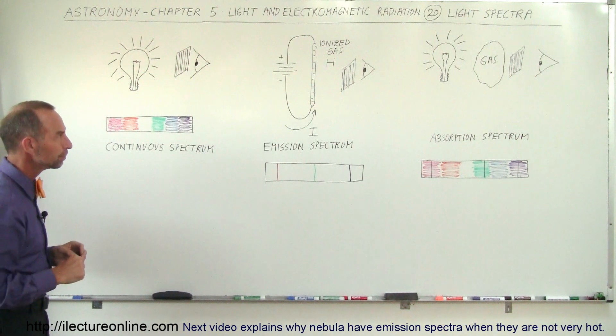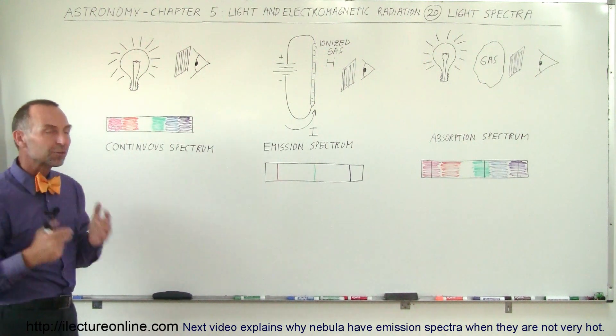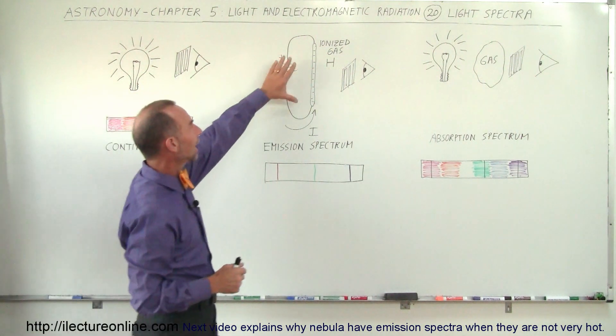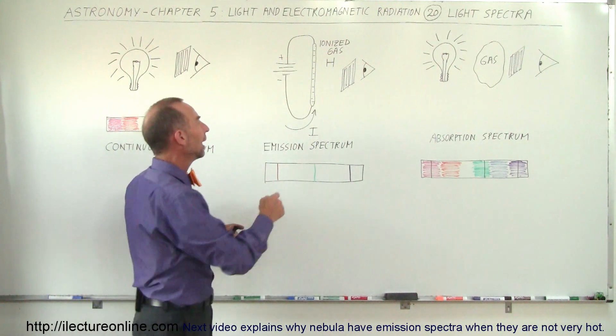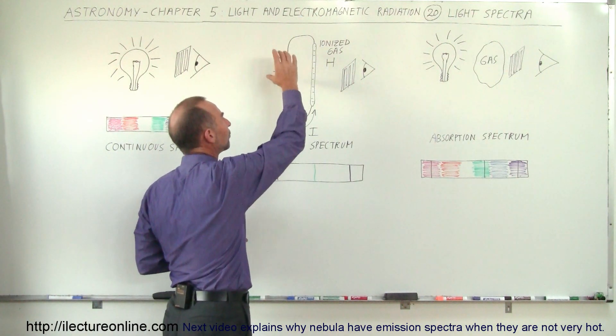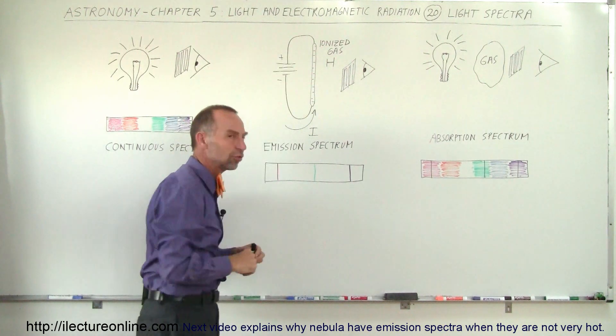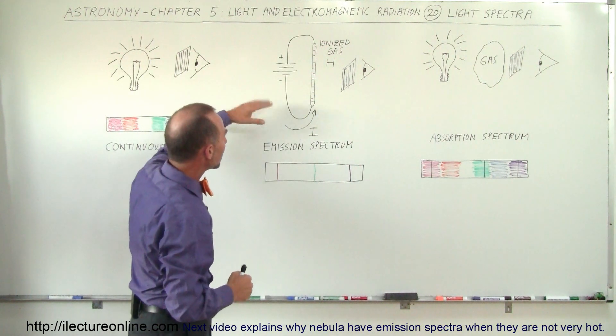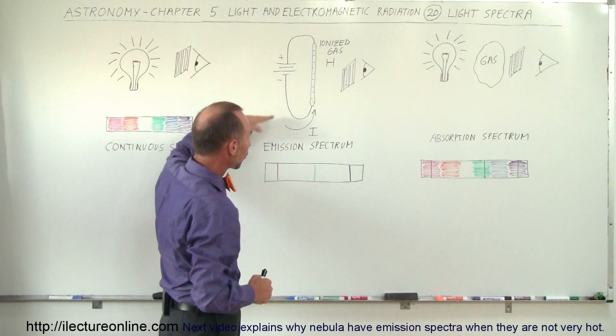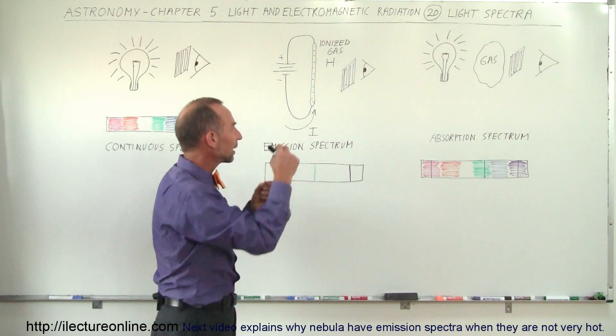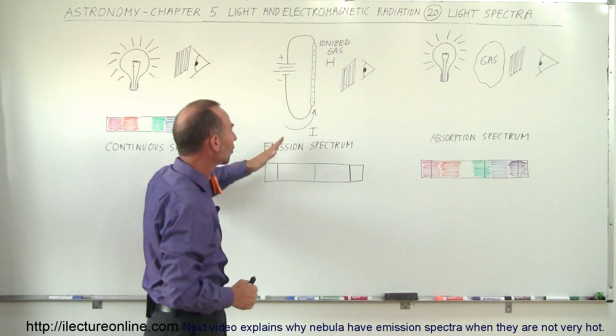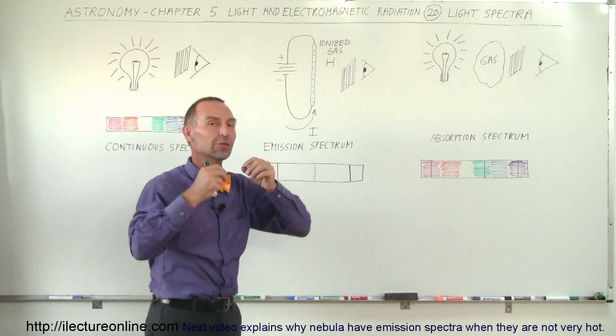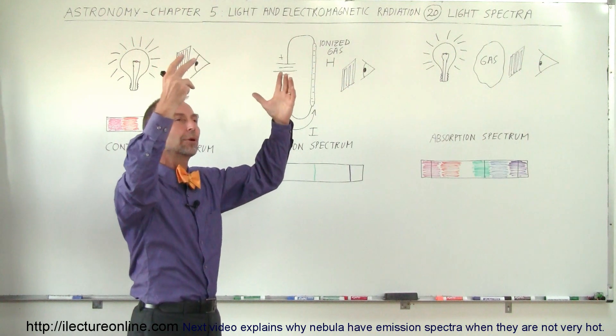If we now do an experiment where we have a glass tube that contains a certain gas, let's say hydrogen, and we hook it up to a very powerful voltage source like a big transformer and put a strong current through the bulb with a big potential difference, we cause the electrons to zip through the gas.